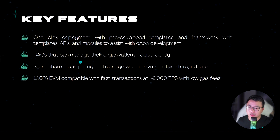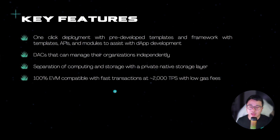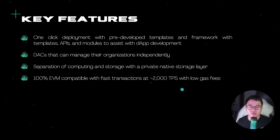Unlike Ethereum, where computation and storage are on the same layer, MATIS separates the computation and storage layers so that it's more modular, allowing the ecosystem to be more scalable. It's 100% EVM compatible, so all existing EVM apps can be ported over easily. They have fast transactions of about 2000 TPS with low gas fees. The gas fee is about a dollar, so it's pretty cheap compared to other Layer 2 tools, though pricier than AVAX or Phantom when congestion is low.